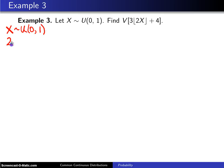It stands to reason that 2X, which is the quantity inside the floor function, would be a uniform random variable between 0 and 2.